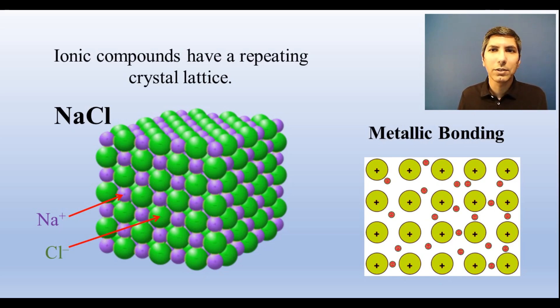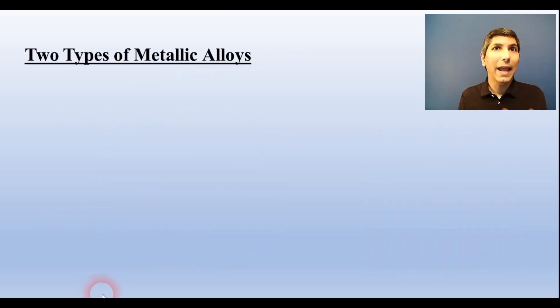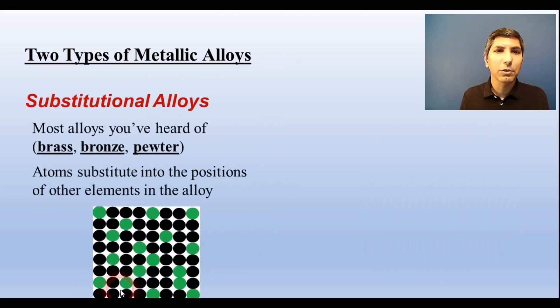The mobility of those electrons helps explain why metals conduct electricity so well. Now different elements can combine with metals to form alloys. When most of us think of an alloy, we think of something like bronze or brass or pewter. Those are substitutional alloys. These are where atoms of one element substitute into positions of some of the atoms of the primary metal in the alloy. So for example, in brass, zinc atoms substitute into the positions where some of the copper atoms are, and it looks like this.